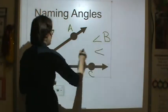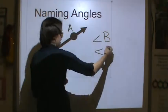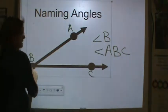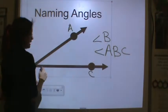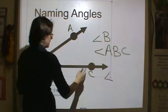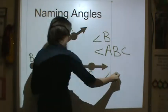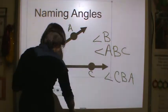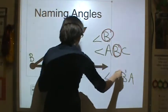I can name it angle A, B, C. And notice the vertex B is in the middle of angle A, B, C. And then I can also name it angle C, B, A. So notice in the middle every single time is the vertex, right?